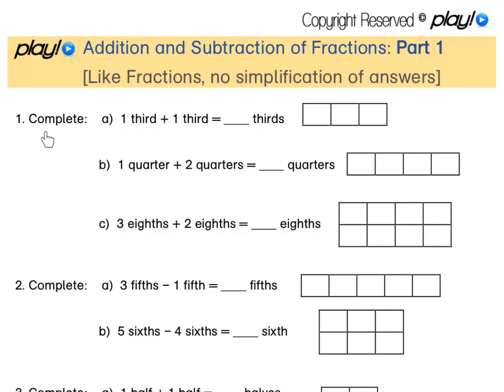Number 1. For A, we have 1 third plus 1 third. If we shade this in the diagram, we have 1 third plus another 1 third, which means in total we have 2 thirds.